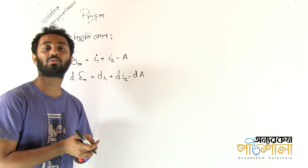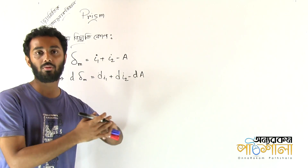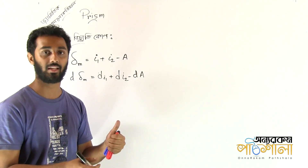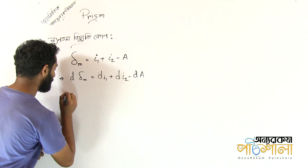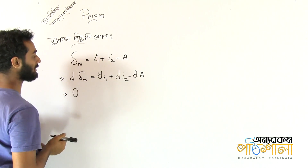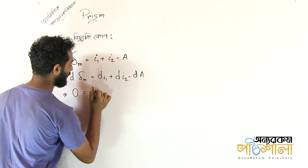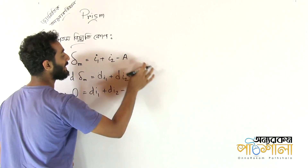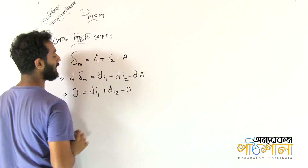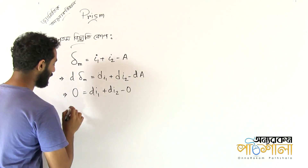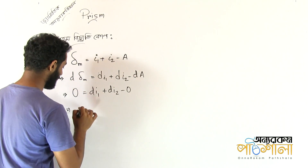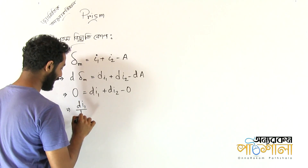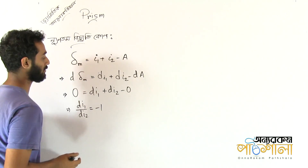Ultimately, we have a fixed value — the lowest value of δM. So the concept is dδM equals 0. That gives us dI1 plus dI2 minus the constant of δM equals 0. Therefore, dI1 by dI2 is equal to minus 1.